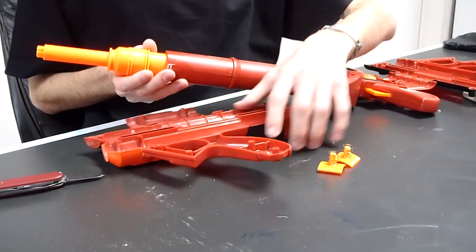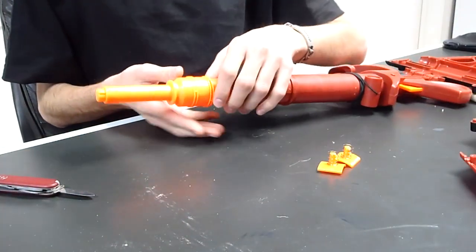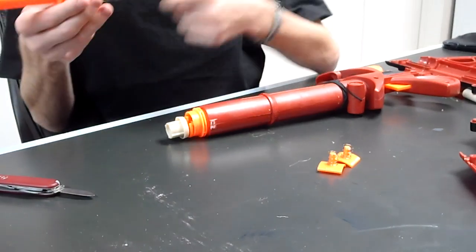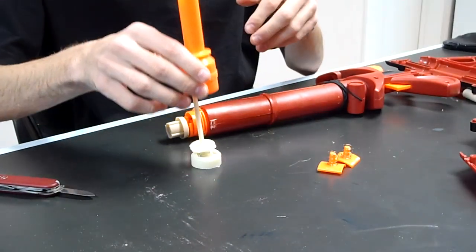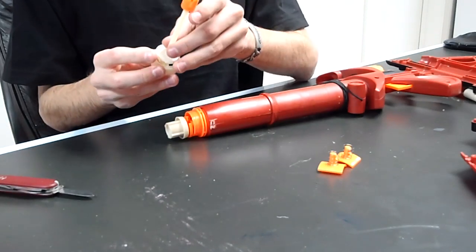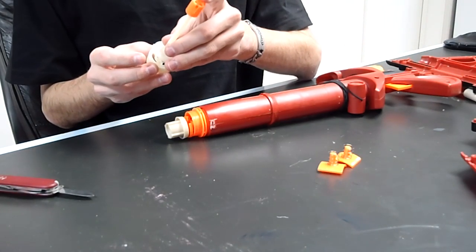Now after that, you come in here and this is your end of your plunger tube. And inside here you have your air restrictor. Now this is a giant air restrictor and it's really easy to take care of. You just take a hobby knife...